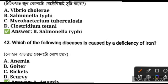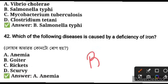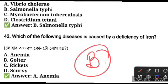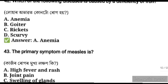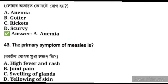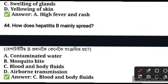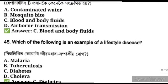Which of the following disease is caused by deficiency of iron? Iron deficiency causes anaemia. Vitamin B12 deficiency is also related — B12 is known as cyanocobalamin. The primary symptom of measles is high fever and rash. How does hepatitis B commonly spread? Hepatitis B spreads through blood and body fluids.